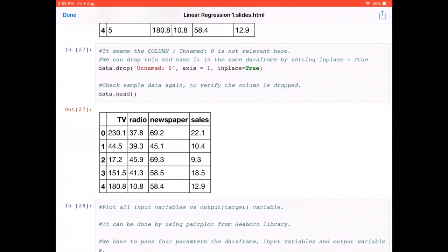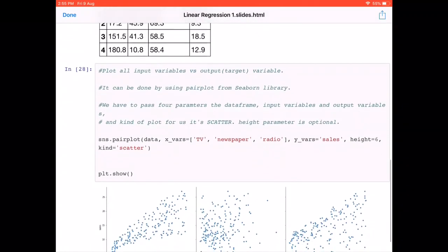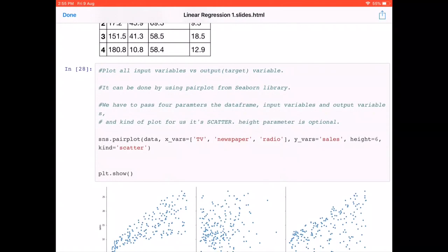The next step is to plot all the input variables versus output variable. Whenever we create a code in our group projects, we always try to see if there are any libraries which can readily do it for us before trying to create our own algorithms. We know that there is a pairplot module in the seaborn library which can do this very easily. The main intention is to be able to plot the relationship between each of these columns in relation to the output variable.